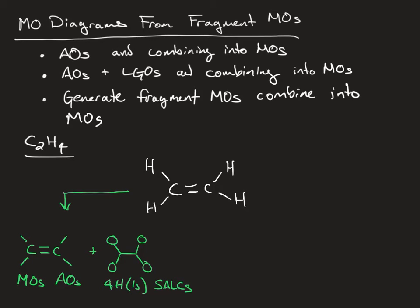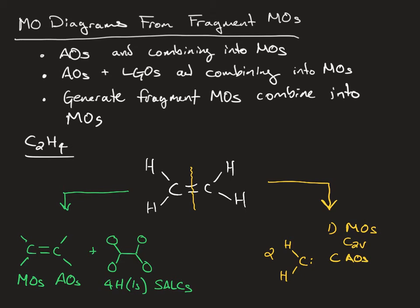The procedure that we're going to use involves breaking the CC bond down the middle and generating MO diagrams for two CH2 groups, and combining these together to generate the molecular orbital diagram for ethene. So what we're going to do is, first, generate MOs in C2V symmetry using carbon atomic orbitals plus the two hydrogen 1s SALCs, and then, two, combine those fragments.